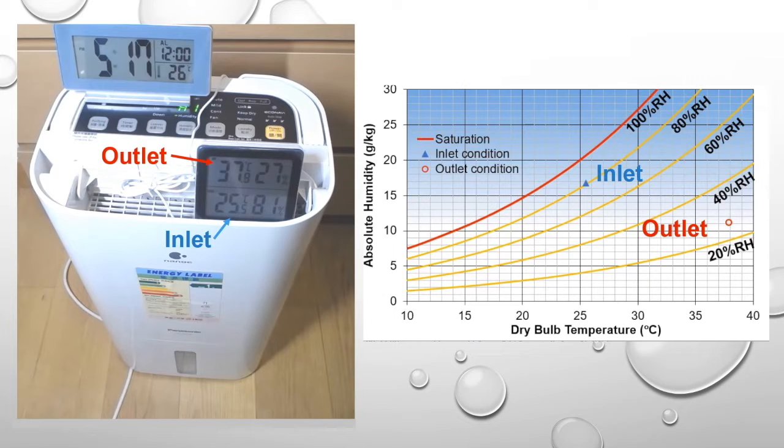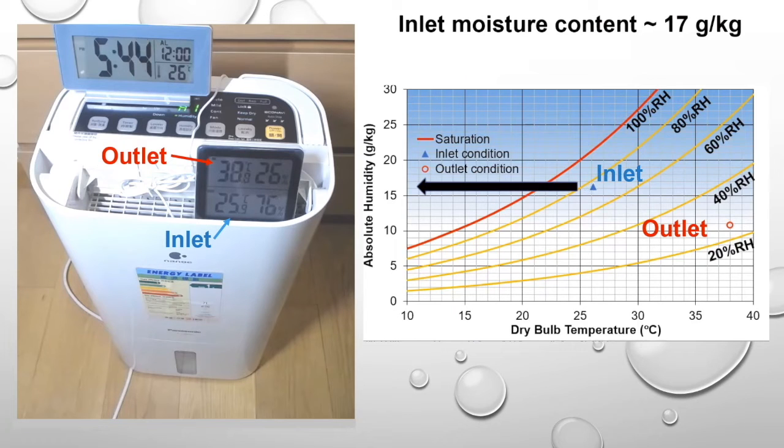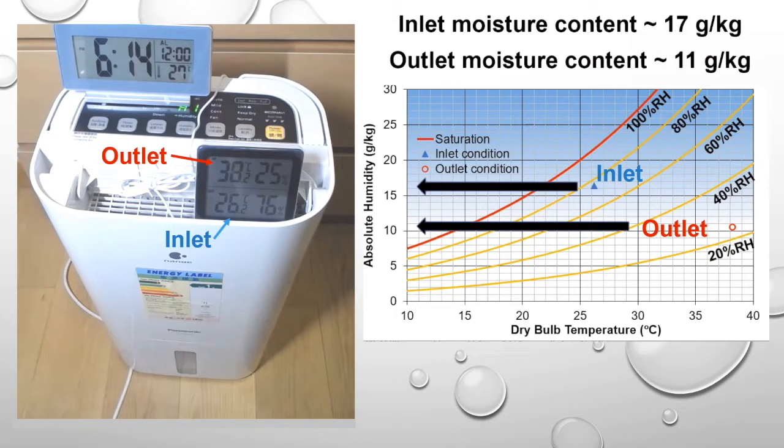We know that the dehumidifier is functioning because the inlet temperature is about 26 degrees Celsius with a relative humidity of about 80%, corresponding to a moisture content of about 17 g per kg, whereas the outlet temperature is about 38 degrees Celsius with a relative humidity of about 25%, corresponding to a moisture content of about 11 g per kg. So the moisture content of the outlet is lower than that of the inlet.